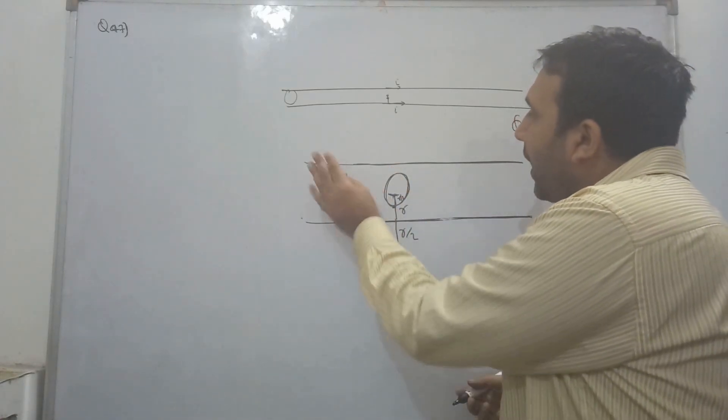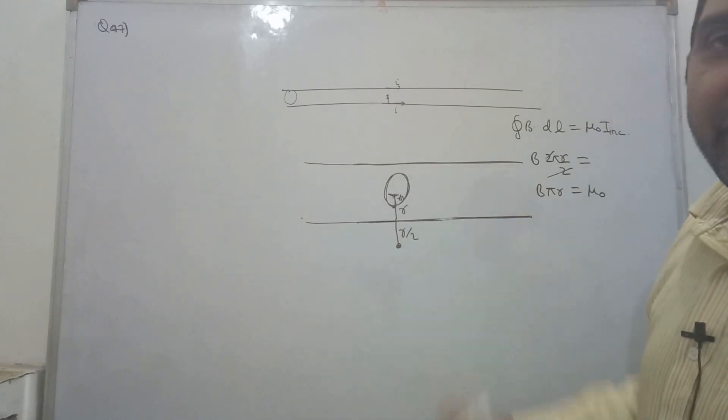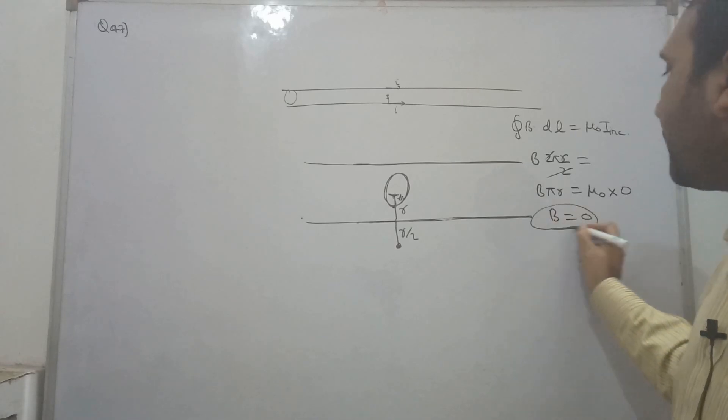Because current is on the conducting surface, inside there is no current. So b equals zero. First part clear.